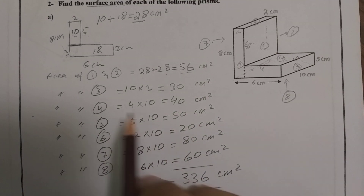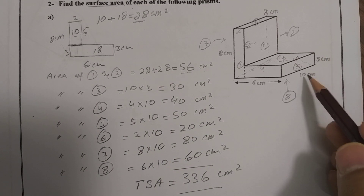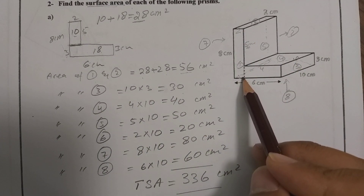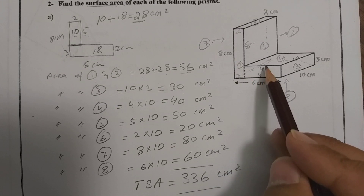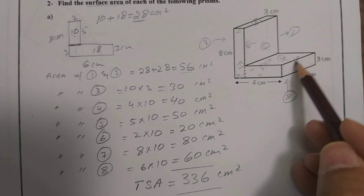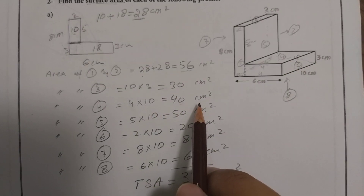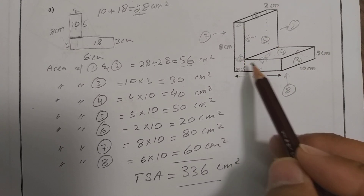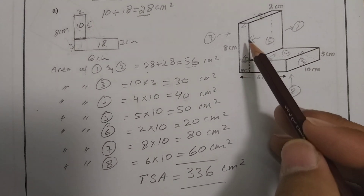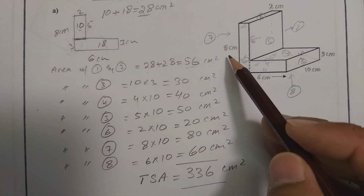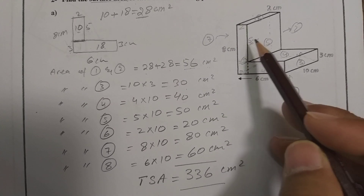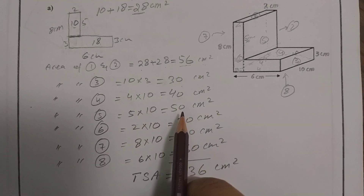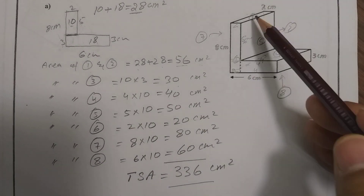Face 3: dimensions 10 × 3 = 30 cm². Face 4: when cut, the remaining width is 4 and depth is 10, giving 4 × 10 = 40 cm². Face 5: after cutting by 3 from the height of 8, we have 5 remaining; with length 10, that gives 5 × 10 = 50 cm².